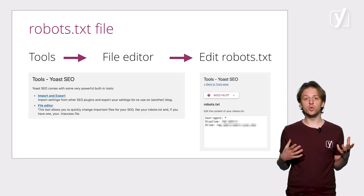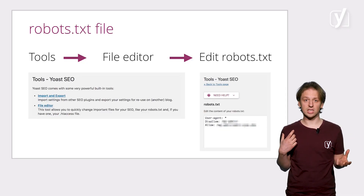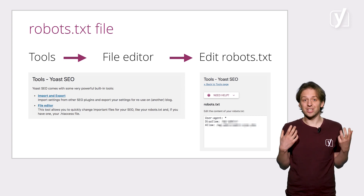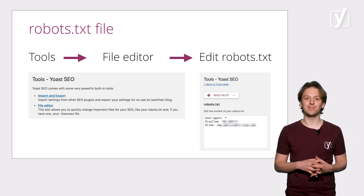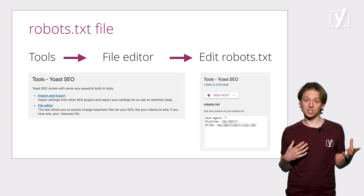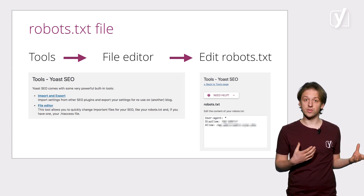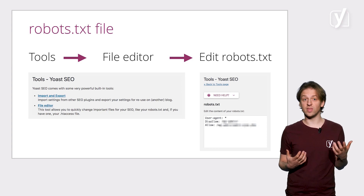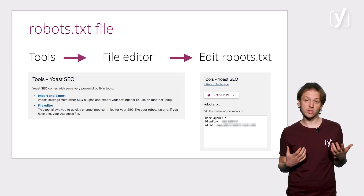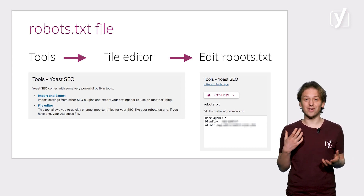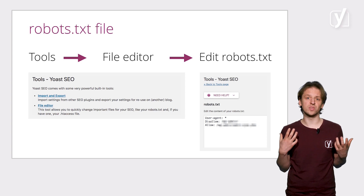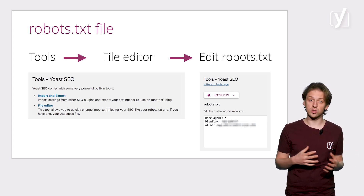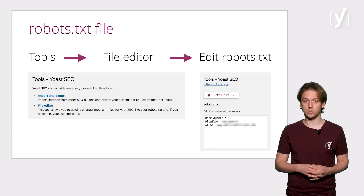If you want to move beyond the simple crawlability settings, the Yoast SEO plugin also allows you to easily edit your own robots.txt file. We already discussed robots.txt in the previous video — it's a file in which you tell the search engine which URLs on that site it's allowed to visit. How this works is advanced stuff, which is beyond the scope of this course. You can learn more about how to edit your robots.txt in our technical SEO course.